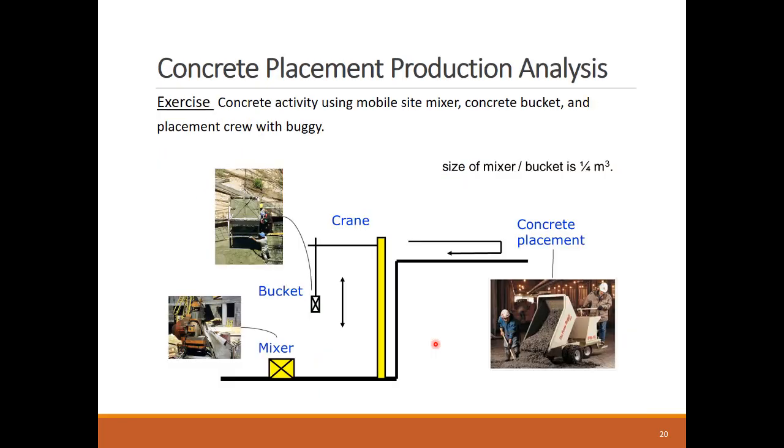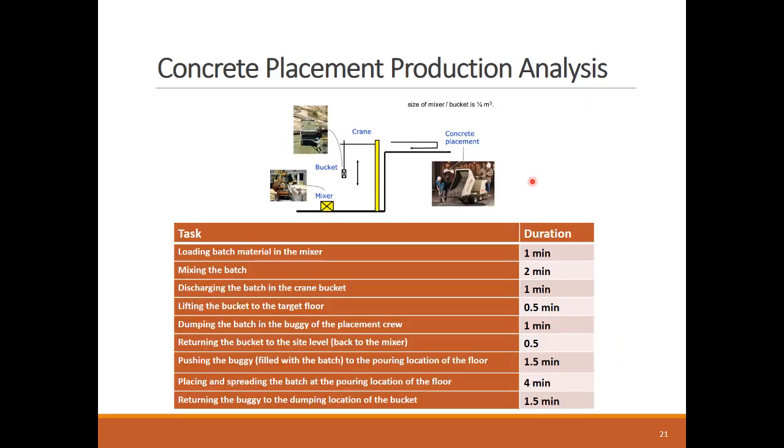Let's check this example to show one of the ways to analyze the production of concrete placement. The example follows a specific concrete placement operation that involves mixing concrete on-site using a remote concrete mixer, delivering the concrete using a crane and placing it in a buggy. The size of every delivered batch is 0.25 cubic meters. These are the estimated times for the different steps performed by the different equipment or crews.